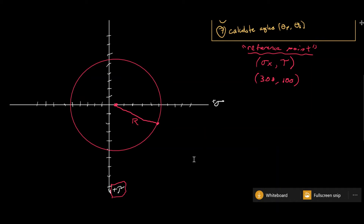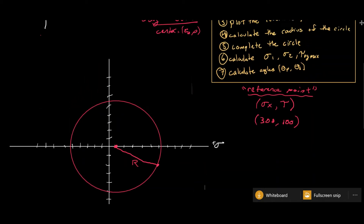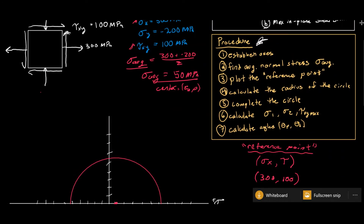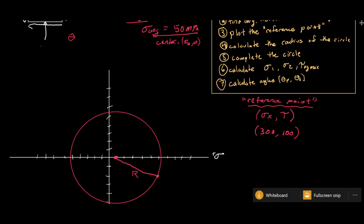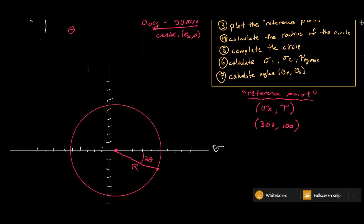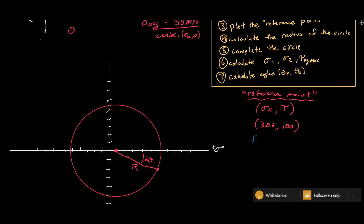Any point on this circle is going to correspond to a stress state where we've rotated the stress element by angle theta. On Mohr's circle, we move two times theta — so we have to move on the circle twice the amount we rotate the element, and that gives us the transformed stress state. The next thing we want to do is find the actual numerical value of the radius.